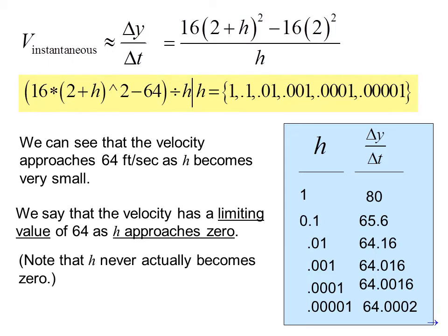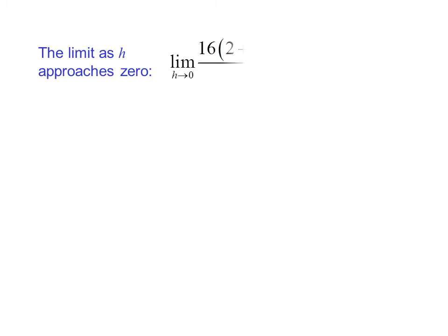Note that h never actually becomes 0. The limit as h approaches 0 is written as: limit as h approaches 0 of [16 times (2 plus h) squared minus 16 times 2 squared], all over h.